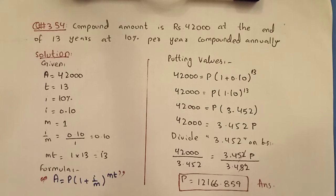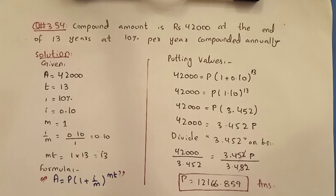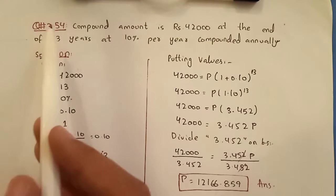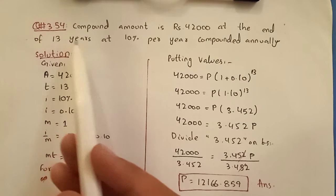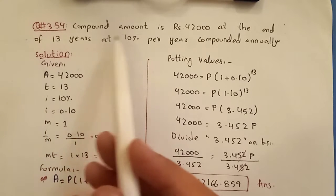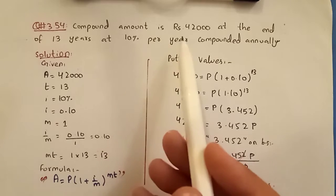Assalamualaikum, welcome back to e-learning point. Today I am going to practice Business Mathematics for 11 Commerce, Chapter 3: Interest and Annuities, Exercise 3. So let's start. Question number 3.54.